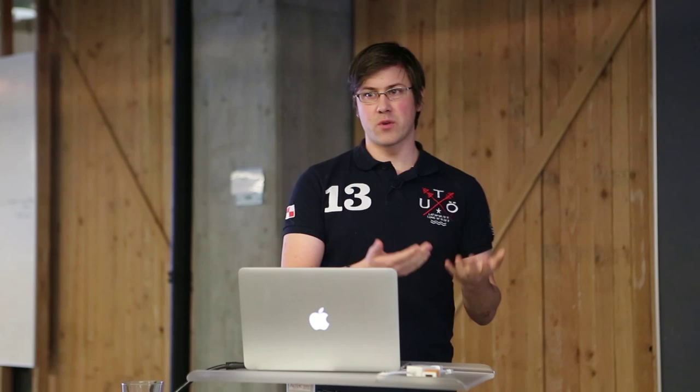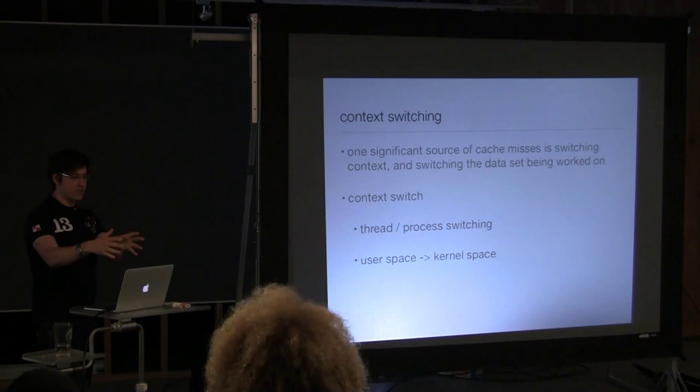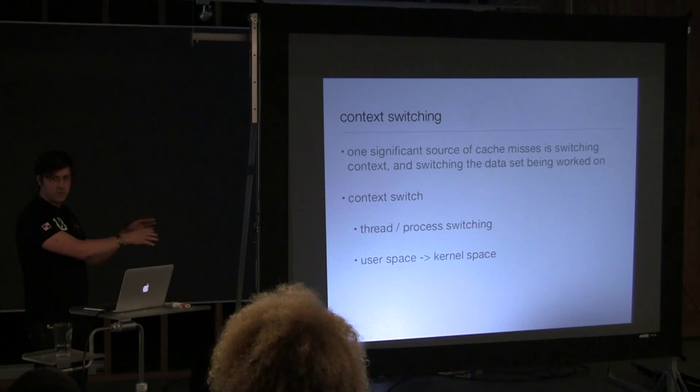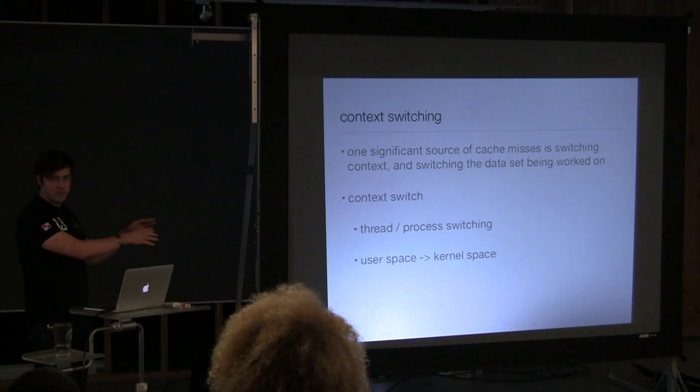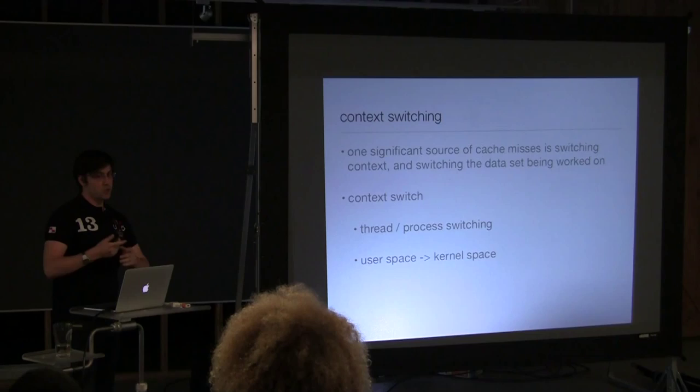So what I want to describe as context switching is whenever the program changes from working on one set of data to a completely different set of data. This is an event where you will essentially wipe out your memory cache because you started working on a different part of the memory. And if you then switch back again, you're going to start cold and you're gonna have to warm up your cache again and there's gonna be stalls. And this does not only happen when you switch between threads. It also happens when you go from user space to kernel space typically when you make a system call, because you have all of your user space stuff going on and then the kernel has all of its own stuff that it's working on.